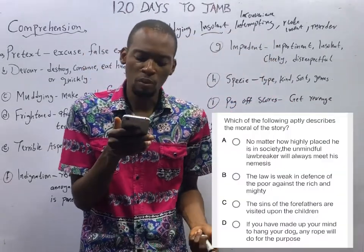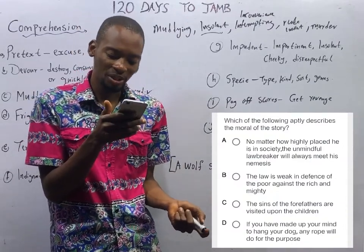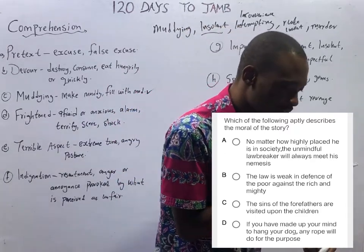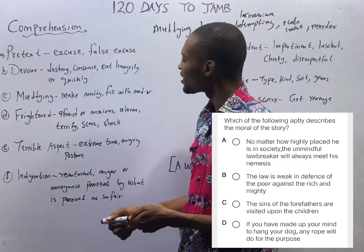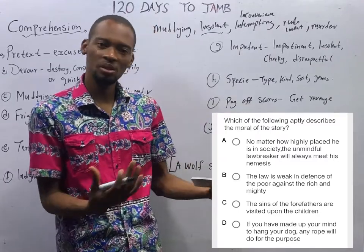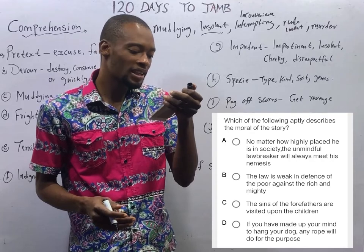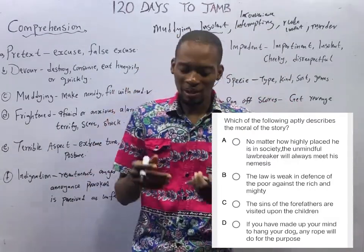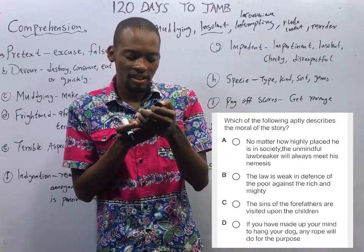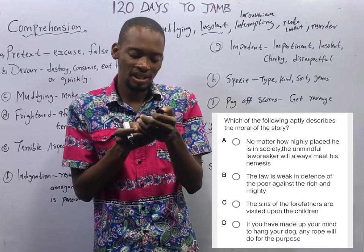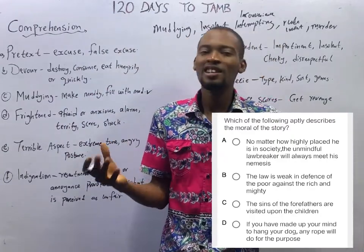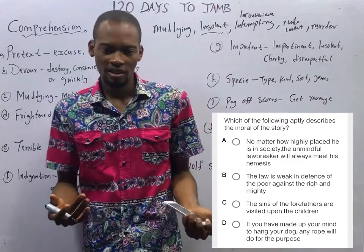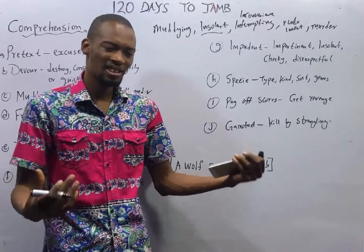Which of the following aptly describes the moral of the story? Option D is correct: 'If you have made up your mind to hang your dog, any rope will do for the purpose.' Option C — 'the sins of the fathers are visited upon the children' — is not the case, as the lamb's father did not sin. Option B — 'the law is weak in defense of the poor against the rich' — had nothing like law in the passage. Option A about an unmindful lawbreaker meeting his nemesis also does not apply, as the wolf faced no repercussions.